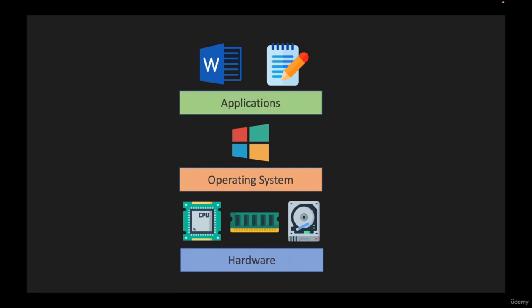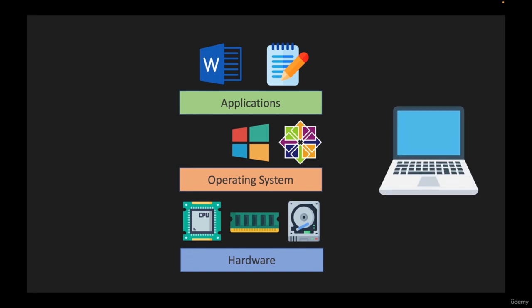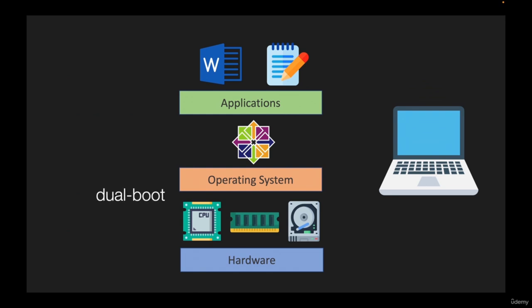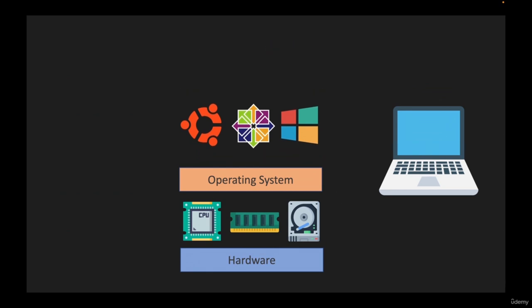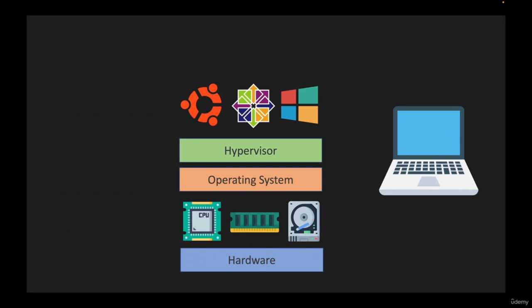These applications are installed on top of the operating system. But what if you want to use the CentOS operating system? You could buy a new laptop with Linux installed, or remove Windows and install Linux on the same hardware. There is also a dual boot option, which allows you to run two operating systems on the same hardware — but that only allows two. What if you want to use Ubuntu, CentOS, and Windows on the same hardware? This is the reason virtualization exists.